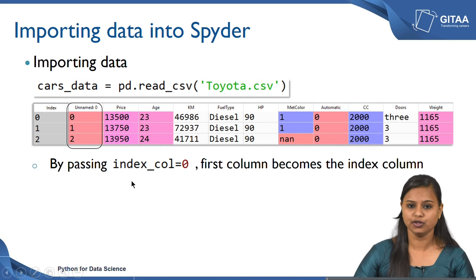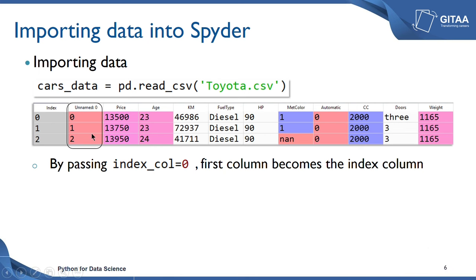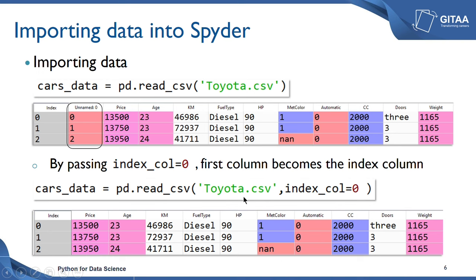To get rid of the duplicate index column, whenever you read any CSV file by passing 'index_col=0', the first column becomes the index column. So when we use 'pd.read_csv' we add the argument 'index_col=0', where the value 0 represents which column should be treated as the index. I need the first column to be treated as the index, so this effectively renames 'unnamed:0' to the index. If you use 1 instead, then the price column would be treated as the row index. Since I already have the unnamed column, I use that as my index column.